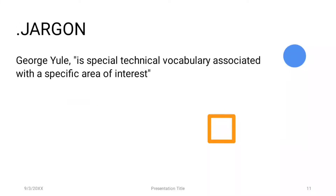Number seven is jargon. Jargon is a special technical vocabulary associated with a specific area of interest or a specific activity or topic, as part of a register. For a specific activity or thing, we use some particular jargon — that is their technical vocabulary.